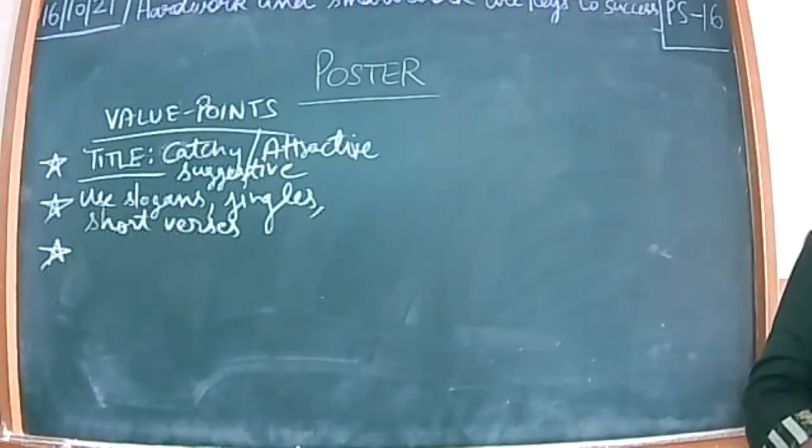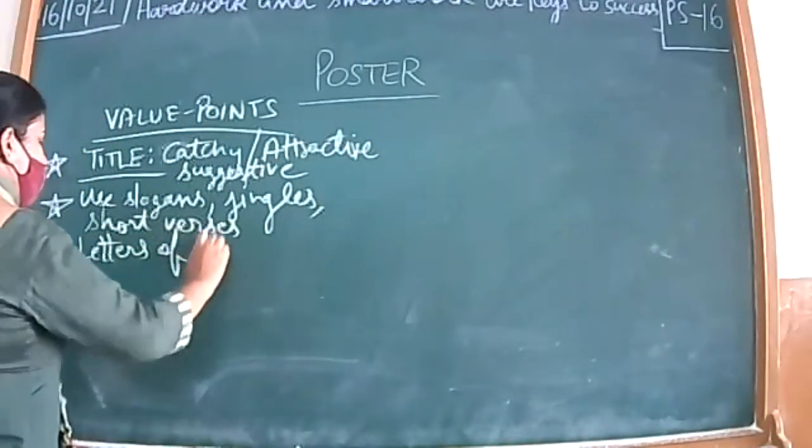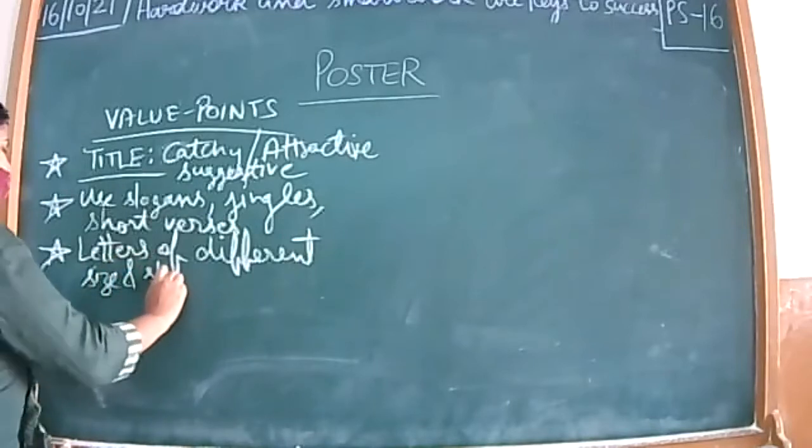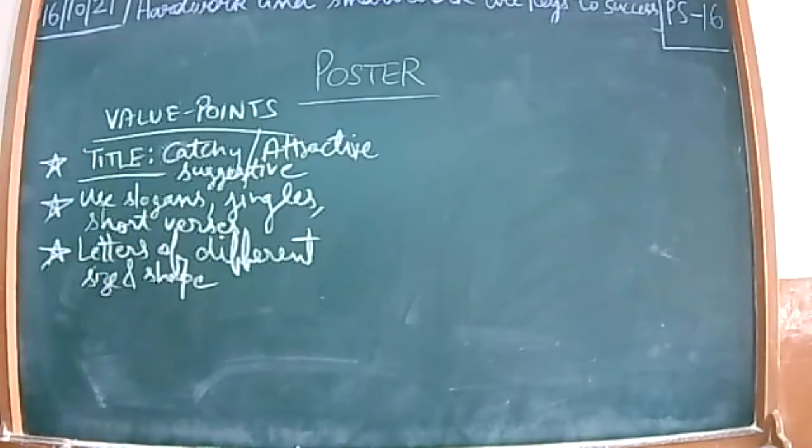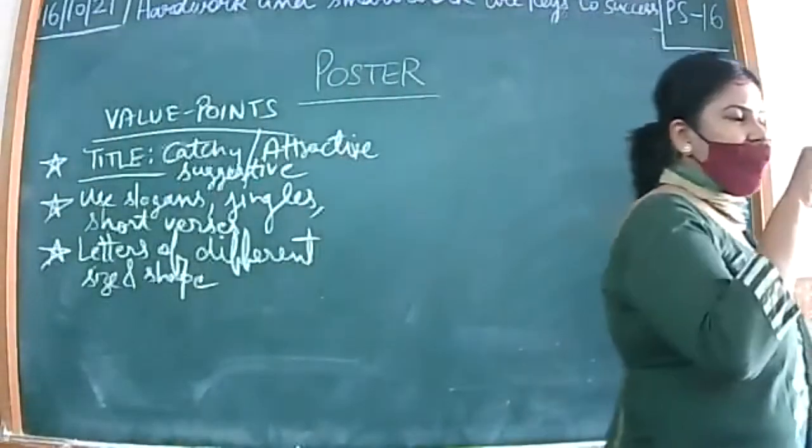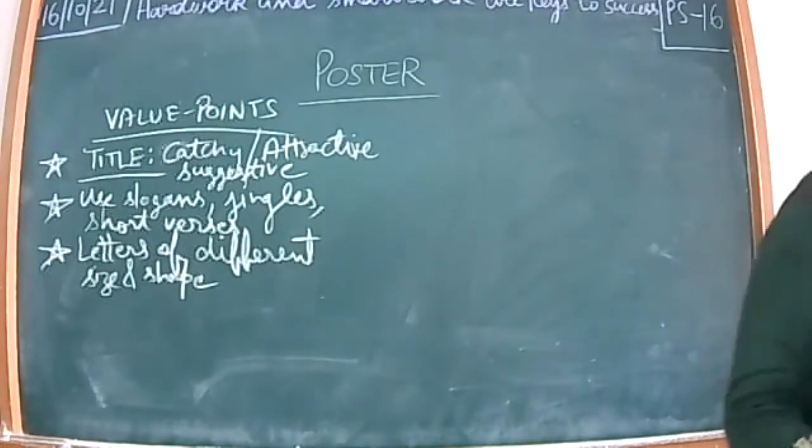If rhyme is there, that becomes a jingle. Next thing is letters of different size and shape. When you give the title, you can write it in two lines in your notebook for highlight. Where you have written slogan or jingle, write in two lines, bold characters and big characters as compared to the rest of the content. You can use calligraphy, bold character and big characters. Content in single line you can use the way you write.